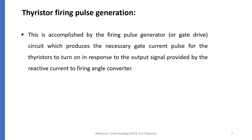The last function is thyristor firing pulse generation. This is accomplished by a firing pulse generator or gate drive circuit which produces the necessary gate current pulse for the thyristor to turn on, in response to the output signal provided by the reactive current to firing angle converter.